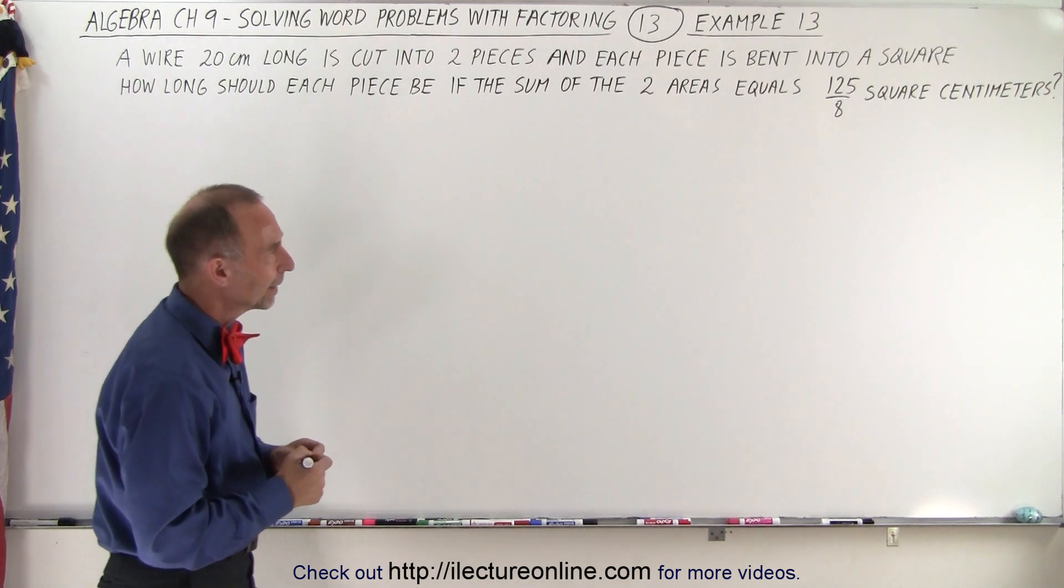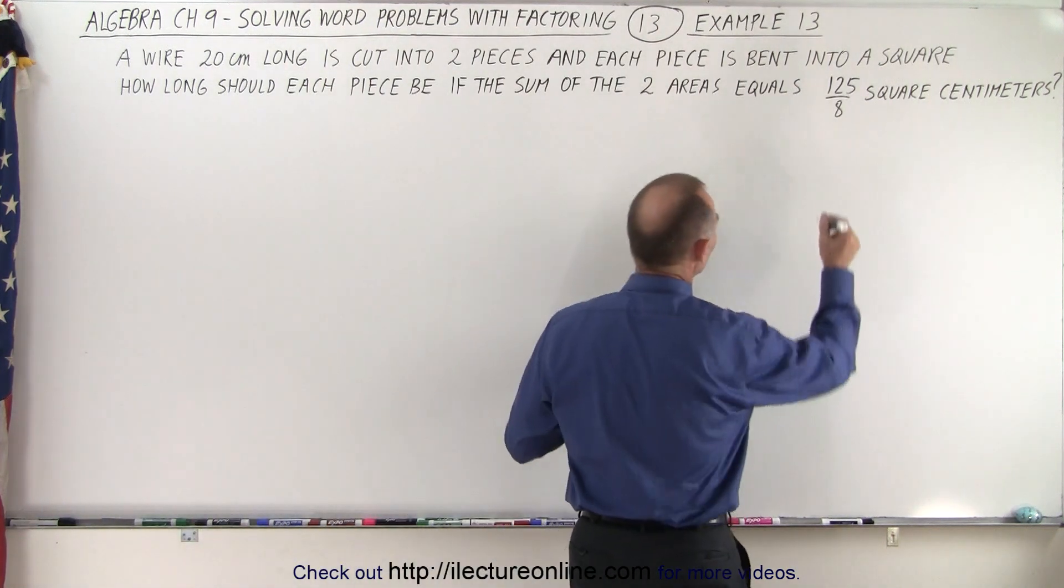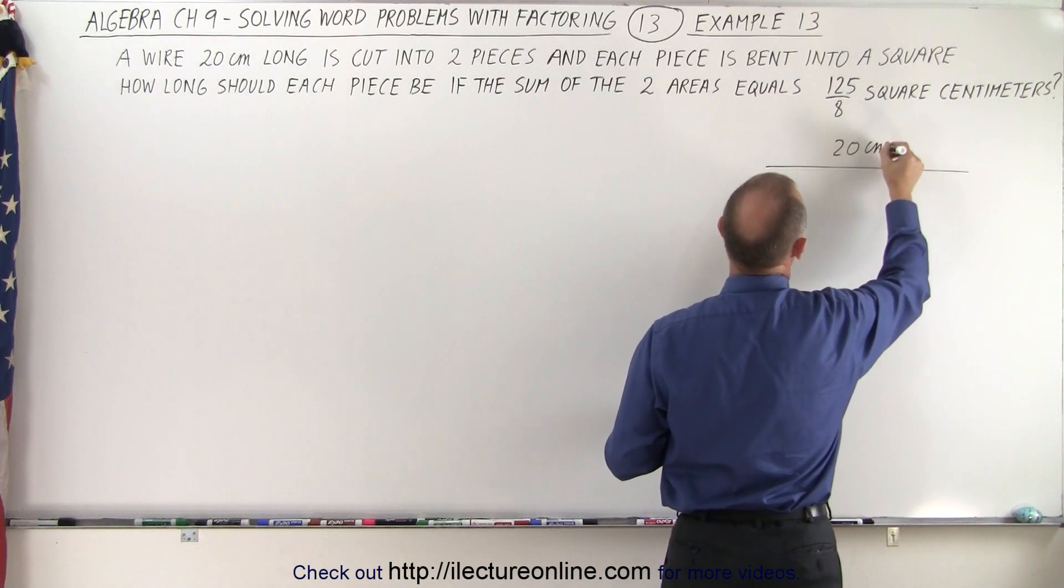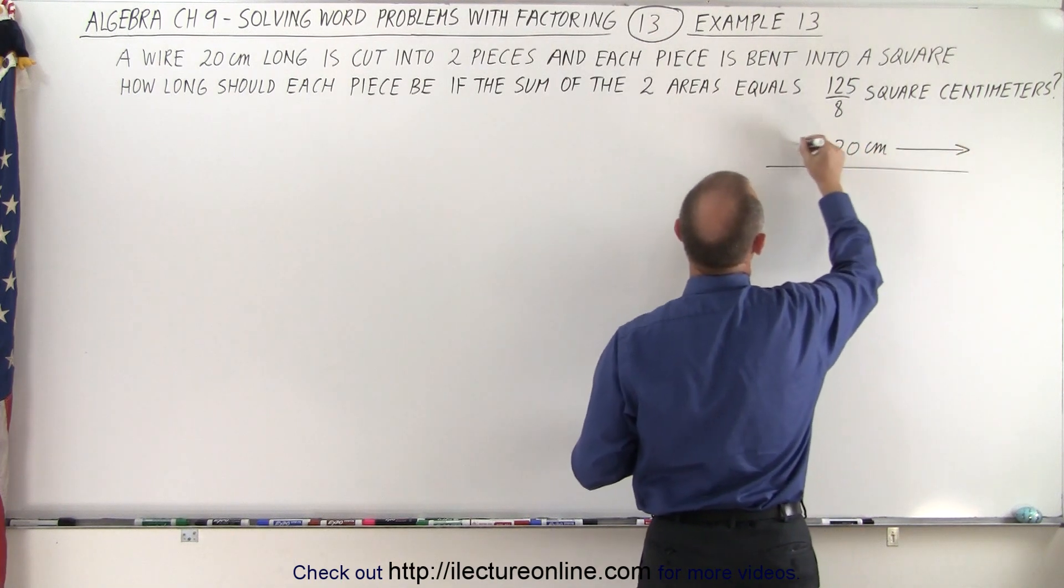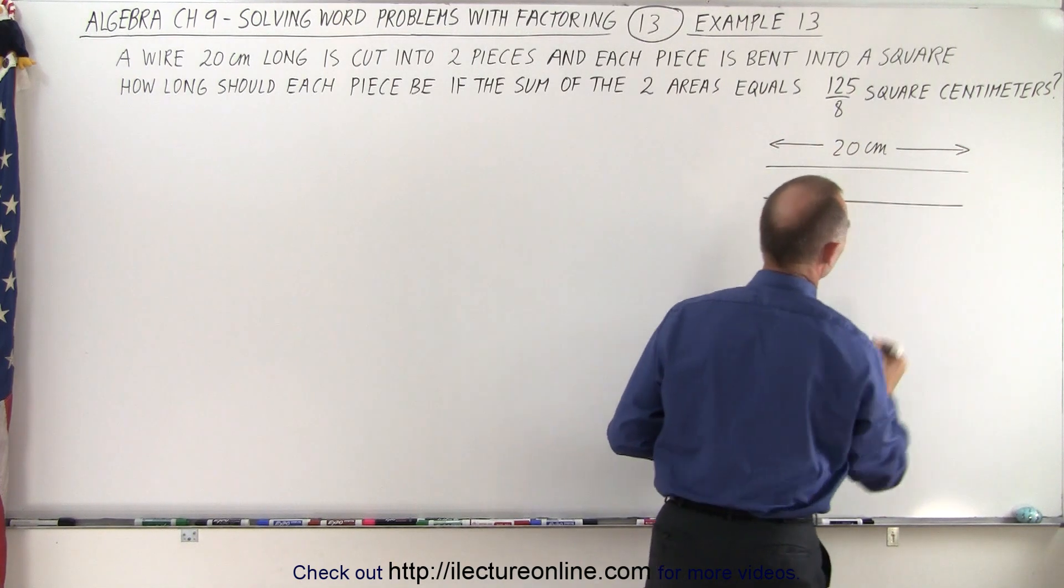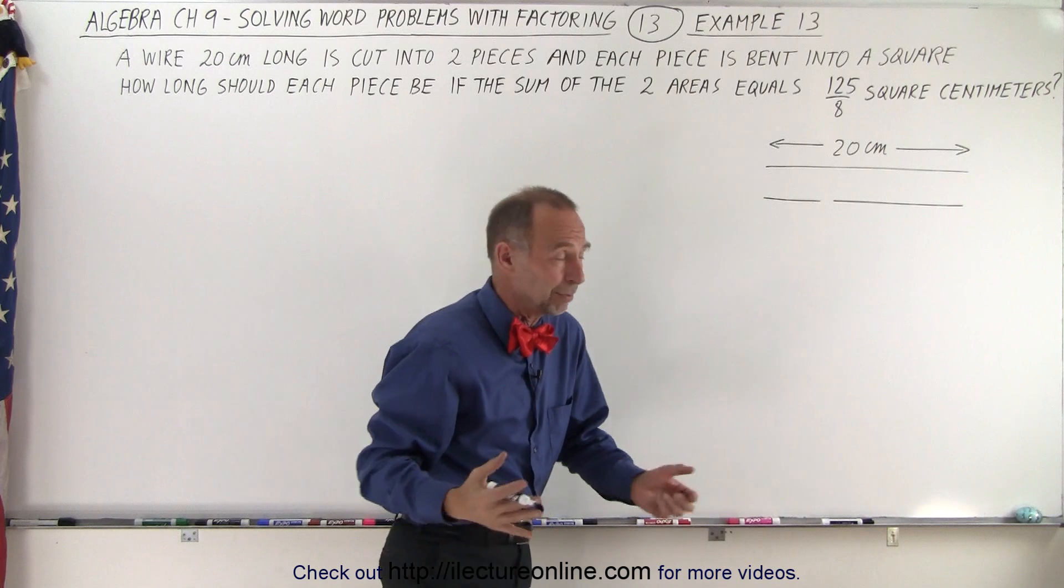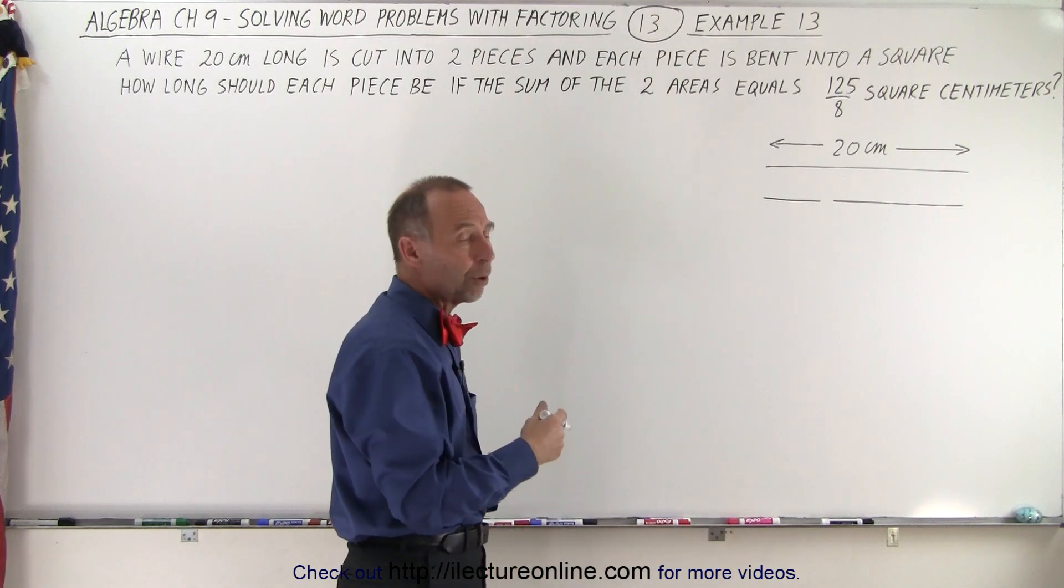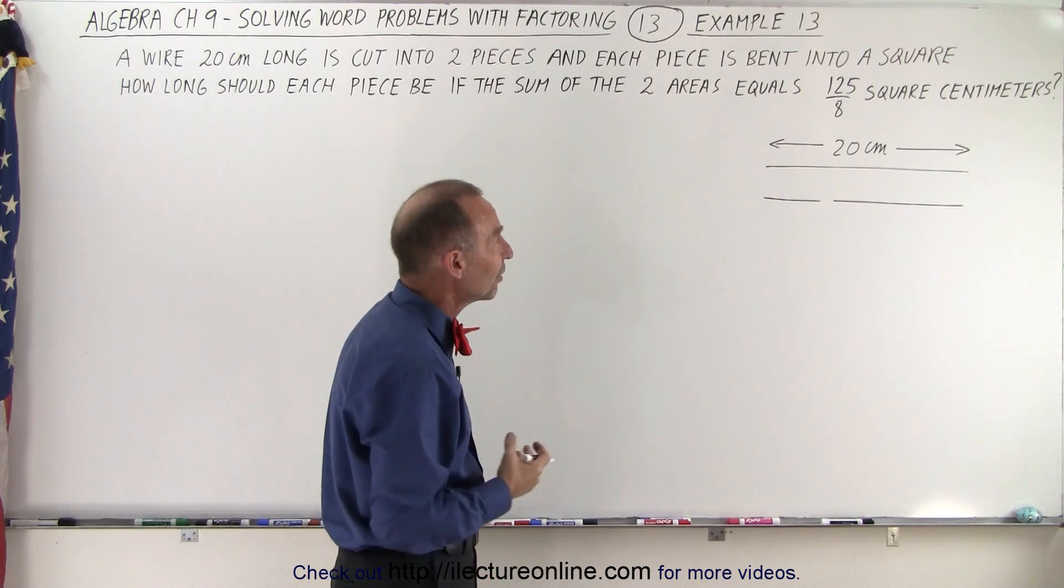Alright, let's think about that. We have a single wire with a length of 20 centimeters, and we're going to cut it into two pieces, a shorter piece and a longer piece, presumably. Maybe they are the same length, but maybe one is smaller than the other. So how are we going to express the length of each piece?